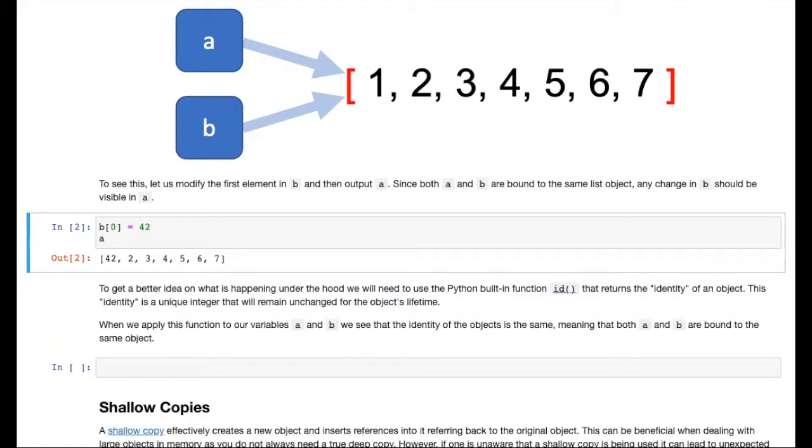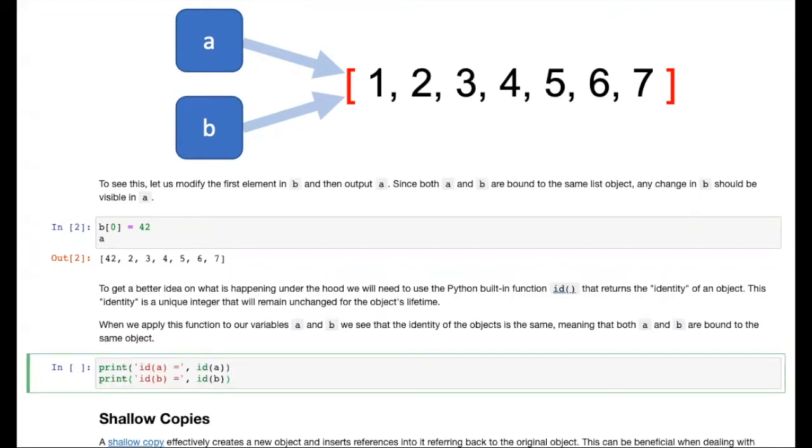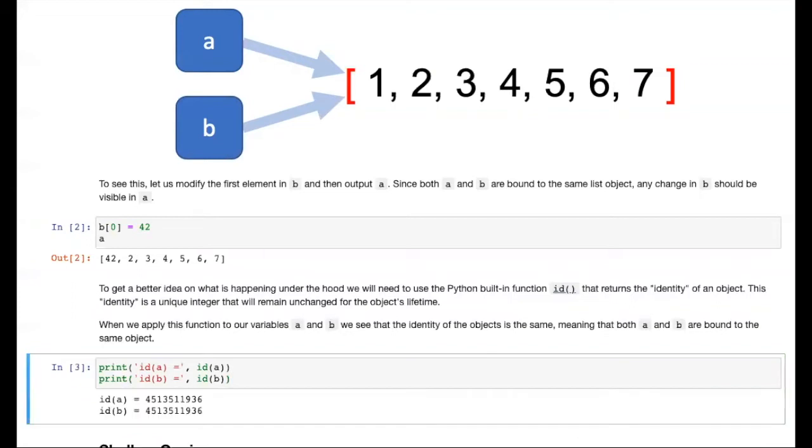Now, if you went through the previous notebook on objects, you know that we can also verify this directly by using the ID function, which returns the identity of an object. So here I'll print out the ID of both A and B, and then we can compare the output. And we see that the ID is in fact the same, so we know that both A and B point to the same object.